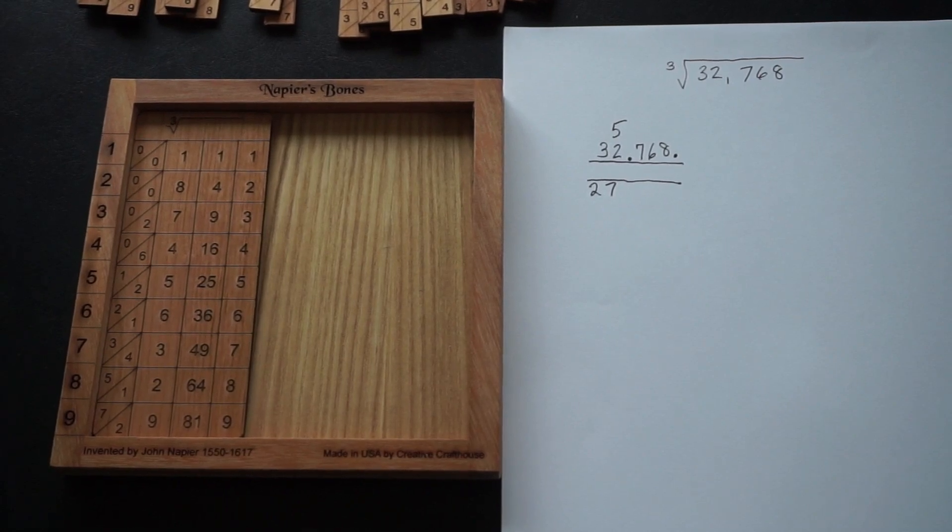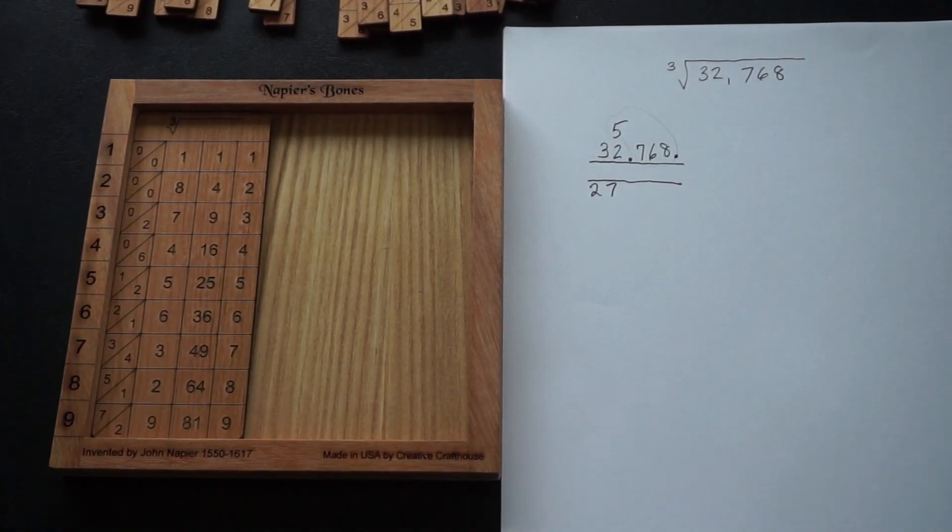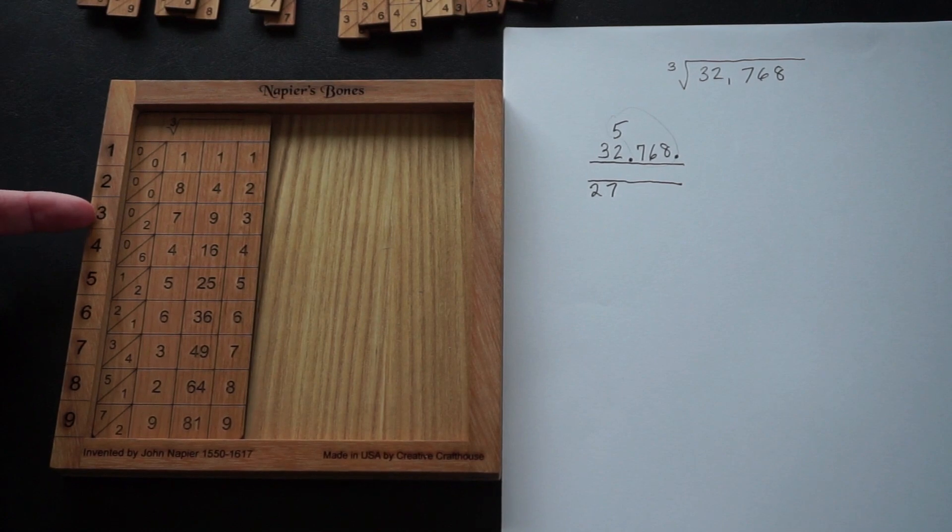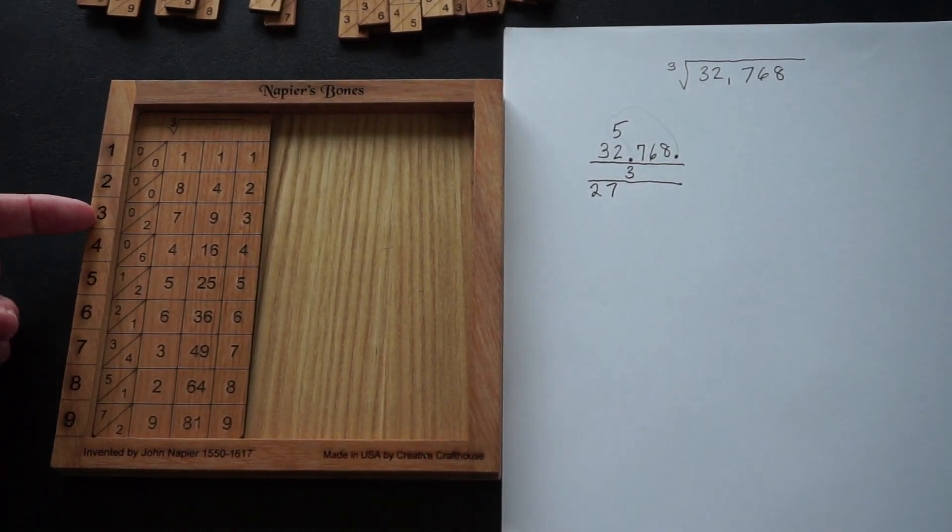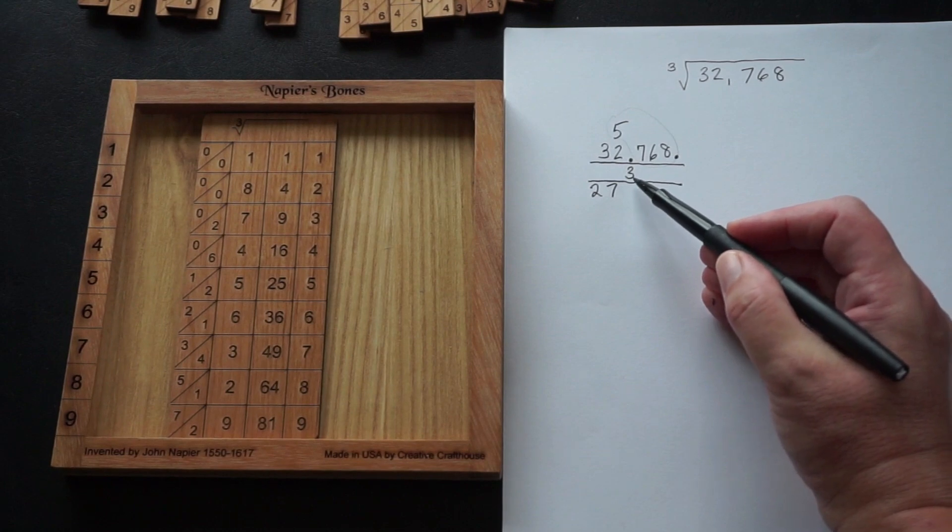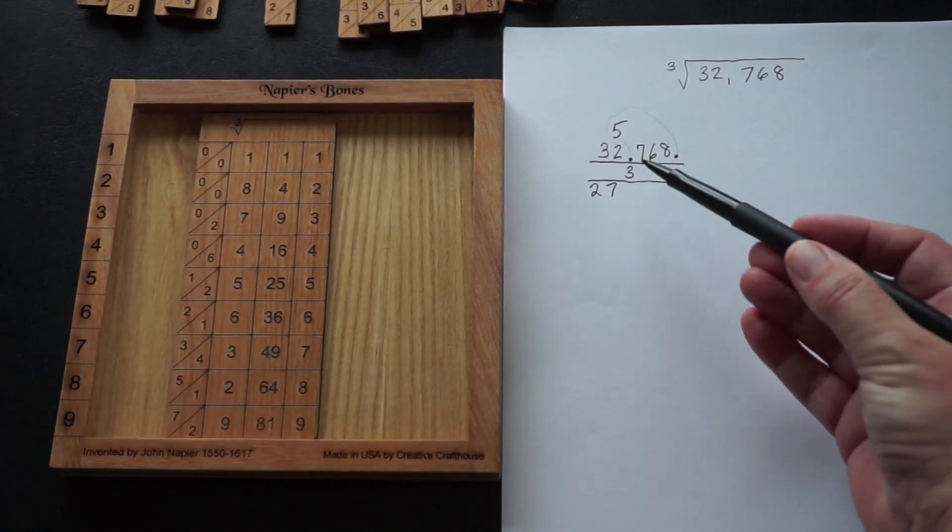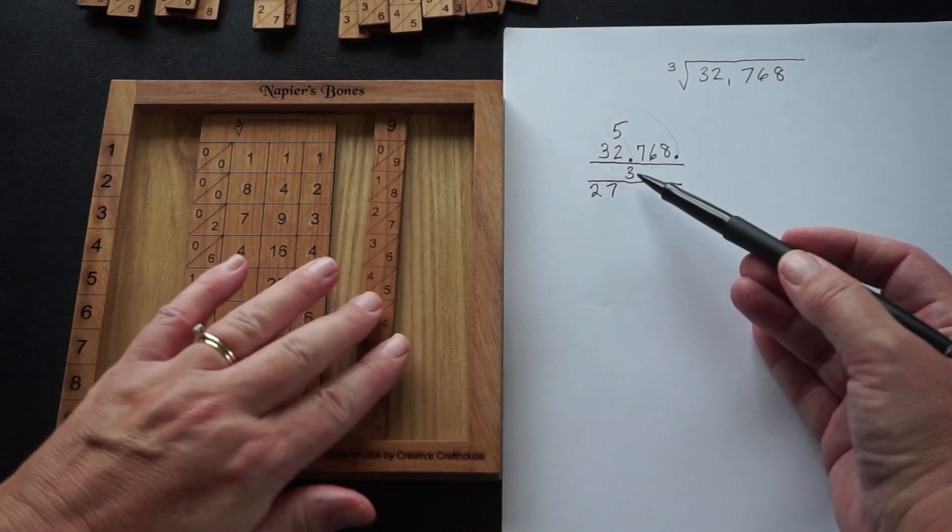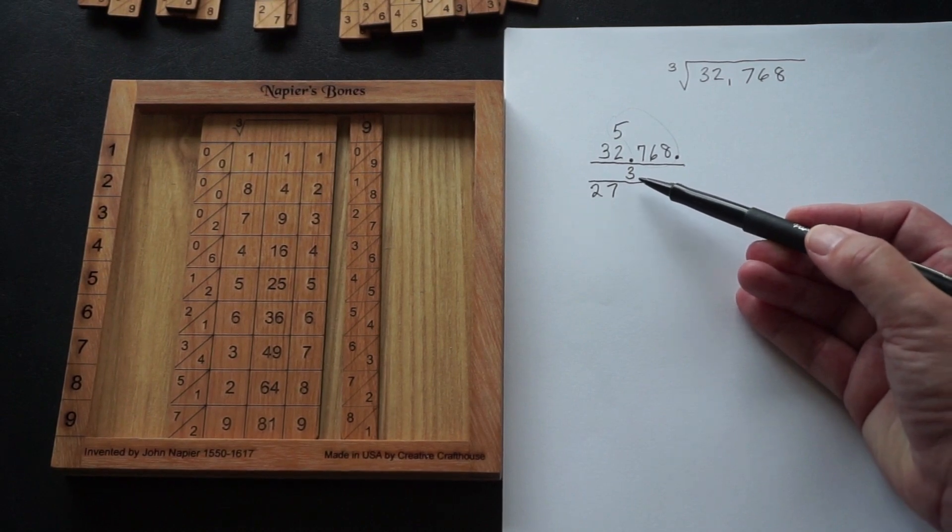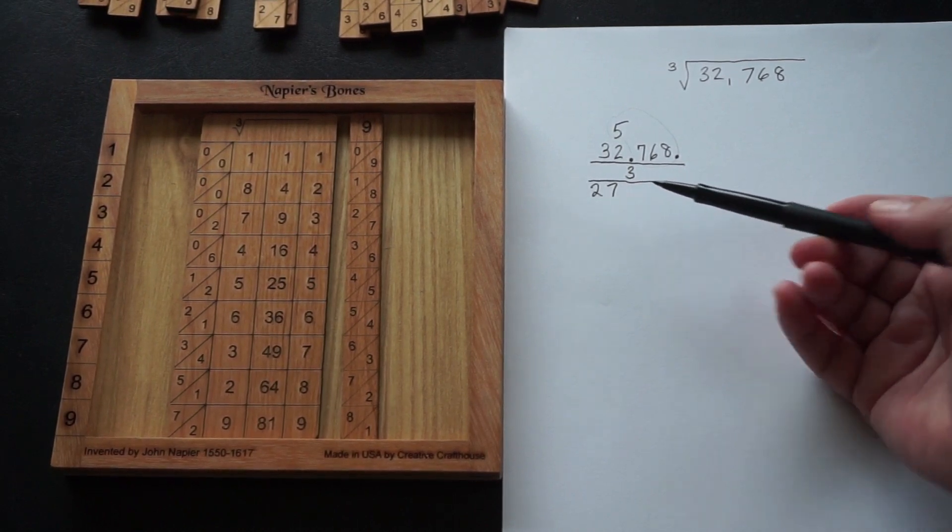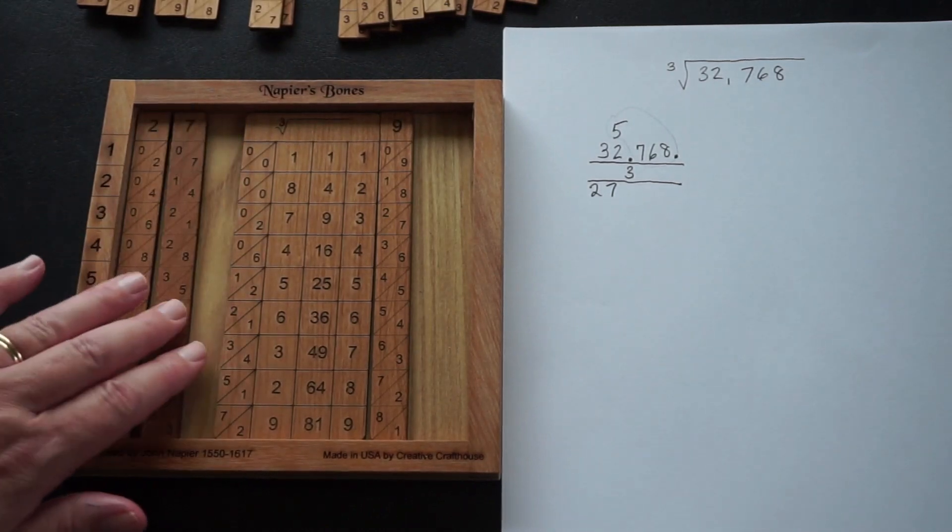Once we set up the board, we will be looking for the number closest to 5768 without going over. I need to write my quatumus, the first part of my answer, and that's a three. That comes from the row that we were working with. So the first thing we do is to take the three and multiply it by three. We're always multiplying by three. It's just a coincidence that this is a three as well. Three times three is nine. That goes on the right. We square the three, which is nine. We multiply the square by three. Nine times three is 27. This goes to the left of the cube root plate.